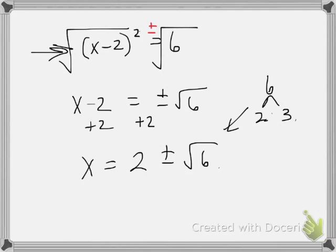2 and 3 are both prime and neither one of those is a perfect square, meaning if I were to ask you, what's the square root of 2 or what's the square root of 3, do we know it? No, our calculator would know it, but we don't know it off the top of our head.